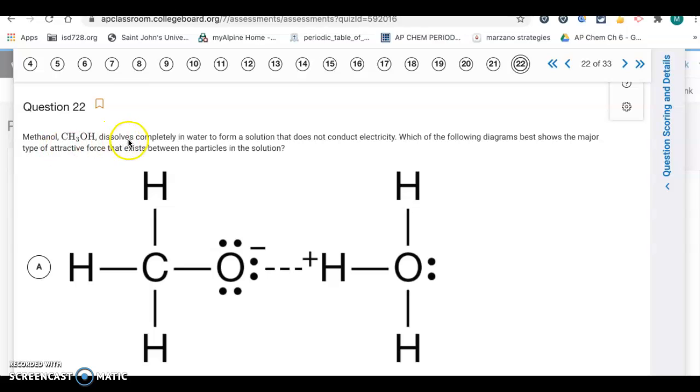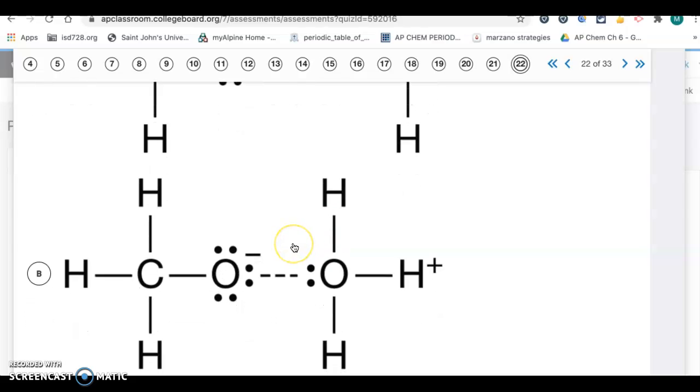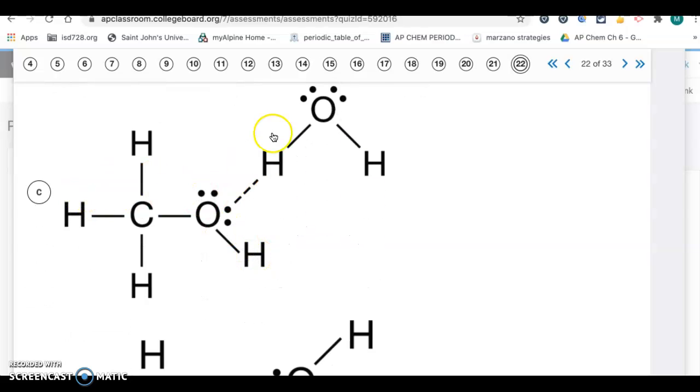Question 22. Methanol dissolves completely in water to form a solution that does not conduct electricity. Which of the following diagrams best shows the major type of attractive force that exists between the particles in the solution? Methanol has hydrogen bonding because of that OH, and water also has hydrogen bonding. We want a diagram that shows hydrogen bonding between the CH3OH molecule and an H2O molecule. That's not it. We would want to have the H connected to this part of that molecule. This is also not it. This is showing H3O+.